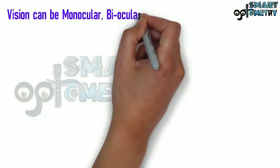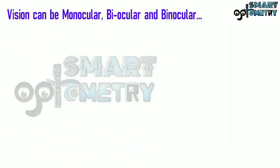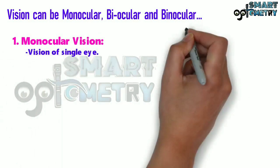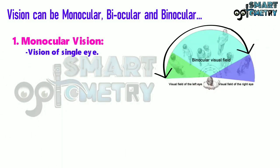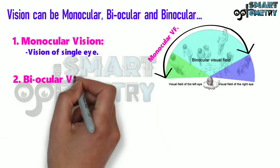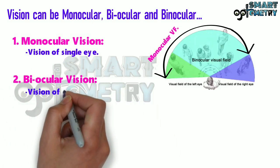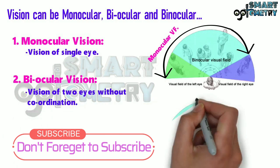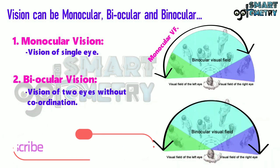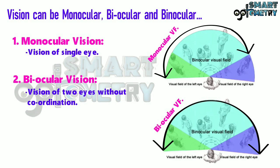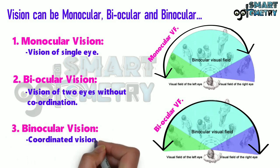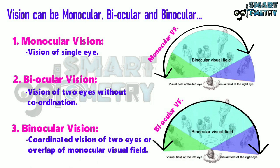Vision can be monocular, biocular, and binocular. Monocular vision is the vision of a single eye. Biocular vision is the vision of two eyes without coordination. Binocular vision is a coordinated vision of two eyes, or the overlap of monocular visual fields.